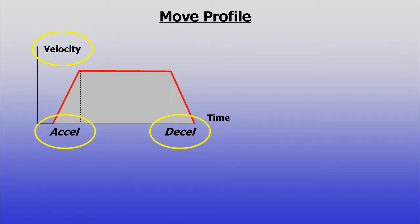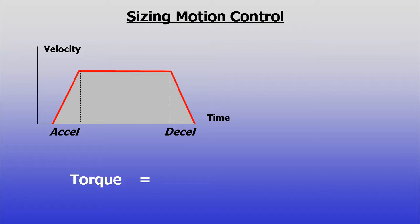Once a move profile is shaped, sizing can move to the next phase. For trapezoidal motion profiles, required torque is the product of inertia and rotational acceleration.